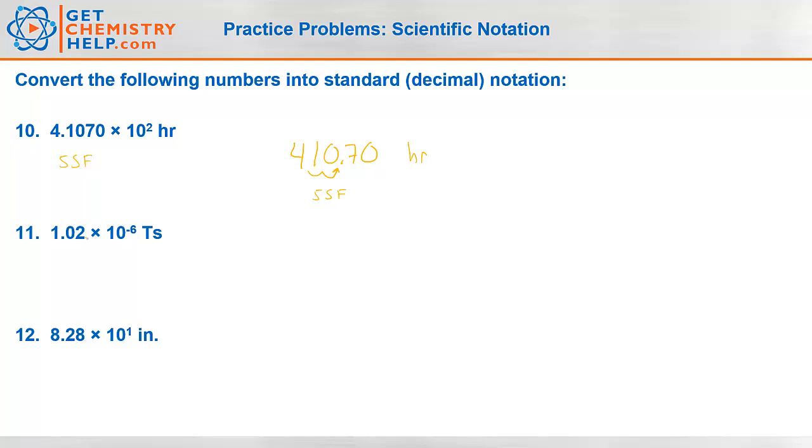Okay 1.02 times 10 to the negative six teraseconds. So 1 0 2. Now negative means it's a small number. I'm dividing by 10 six times. We're going to move it six times to the right. Okay and I'll fill in all of these with zeros. So 0.000000102 teraseconds.